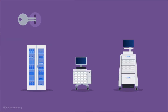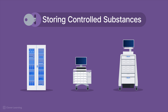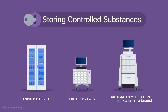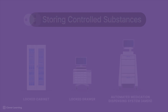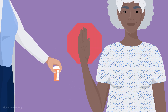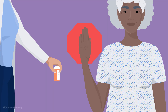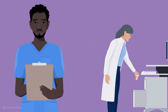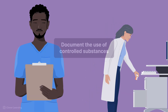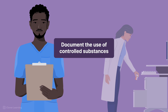The handling of controlled substances is governed by strict legal and professional requirements to prevent misuse and diversion. Controlled substances must be stored in a locked cabinet in a medicine room, a locked drawer in a locked medicine cart, or an automated medication dispensing system. If a controlled substance is removed from one of these locked areas and the patient refuses it, the disposal of the drug must be witnessed by other personnel.